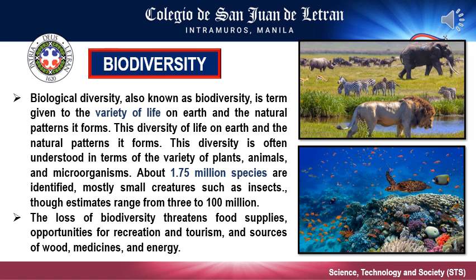Biodiversity includes genetic differences within each species, for example between varieties of crops and breeds of livestock. Chromosomes, genes, and DNA — the building blocks of life — determine the uniqueness of each individual and each species. It is the combination of life forms and their interaction with each other and with the rest of the environment that has made Earth a uniquely habitable place for humans.